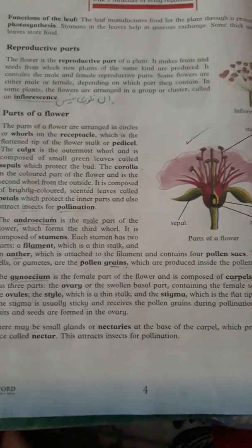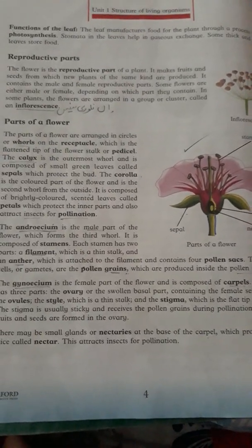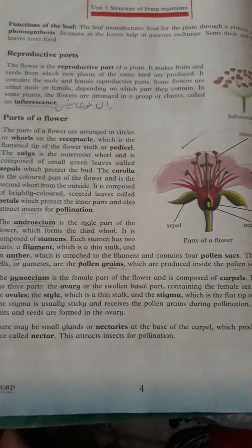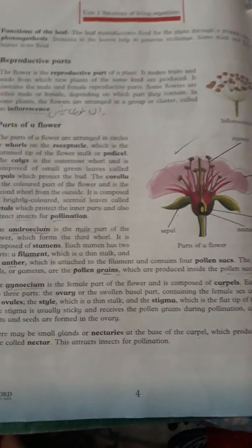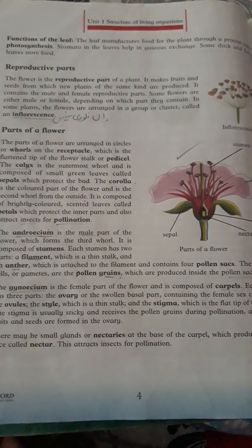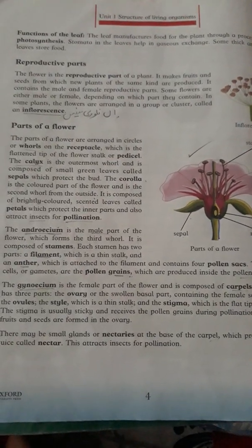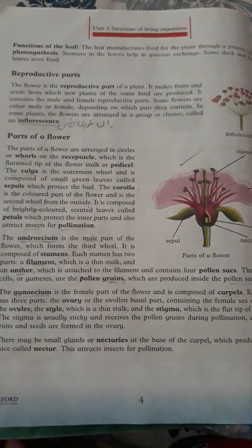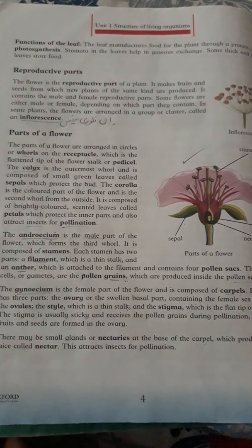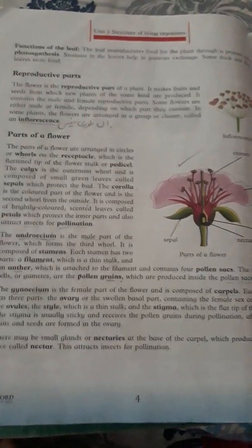We have learned the reproductive part and the further sub-parts of a flower. The flower is the reproductive part; it consists of two further parts — androecium and gynoecium. Androecium is the male part and gynoecium is the female part. Androecium, or the stamen, consists of the filament and the anther. The filament has pollen sacs which produce pollen grains, and the anther is the place where pollen grains are attached to insects.